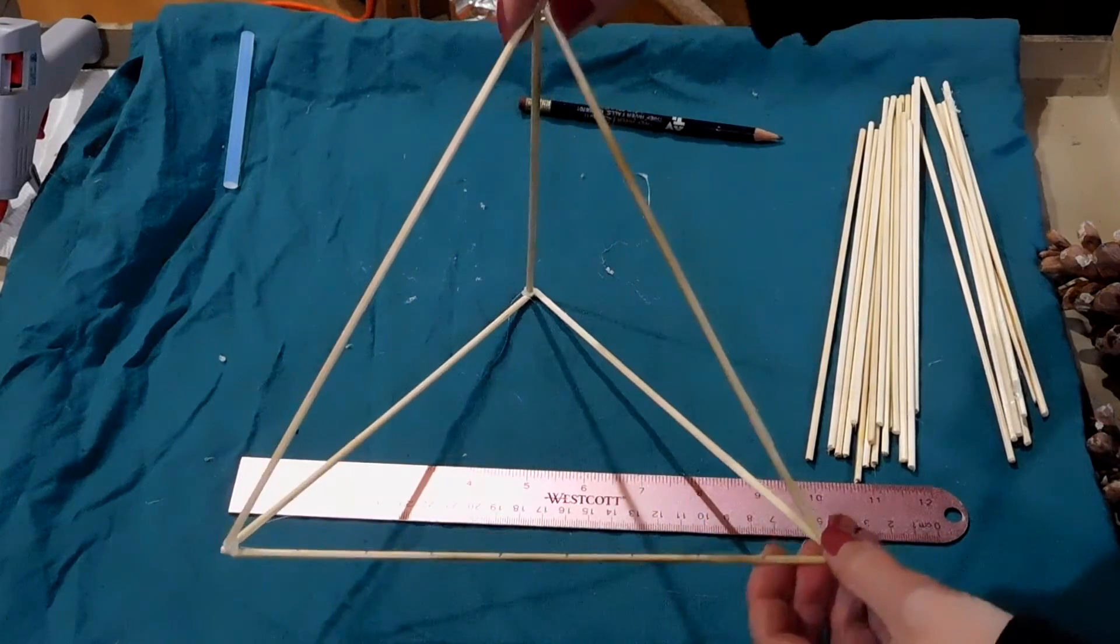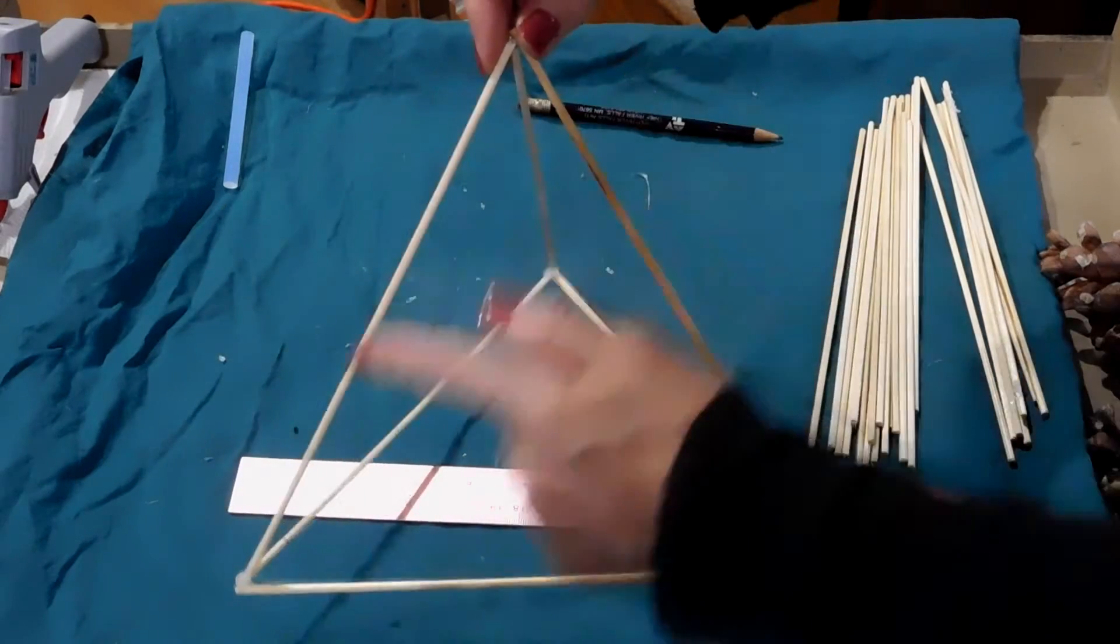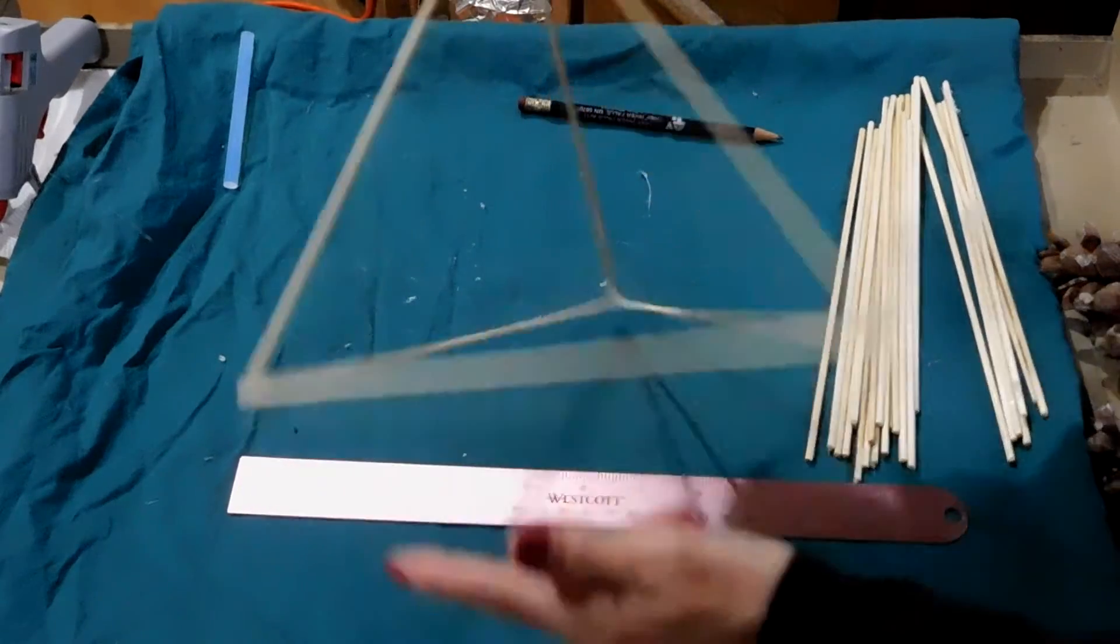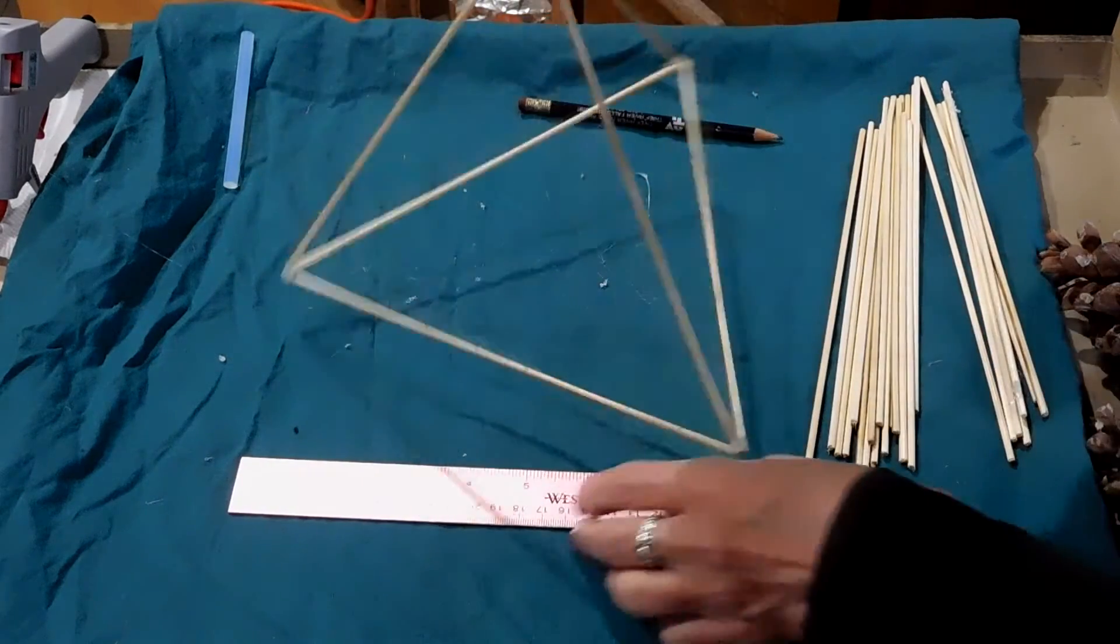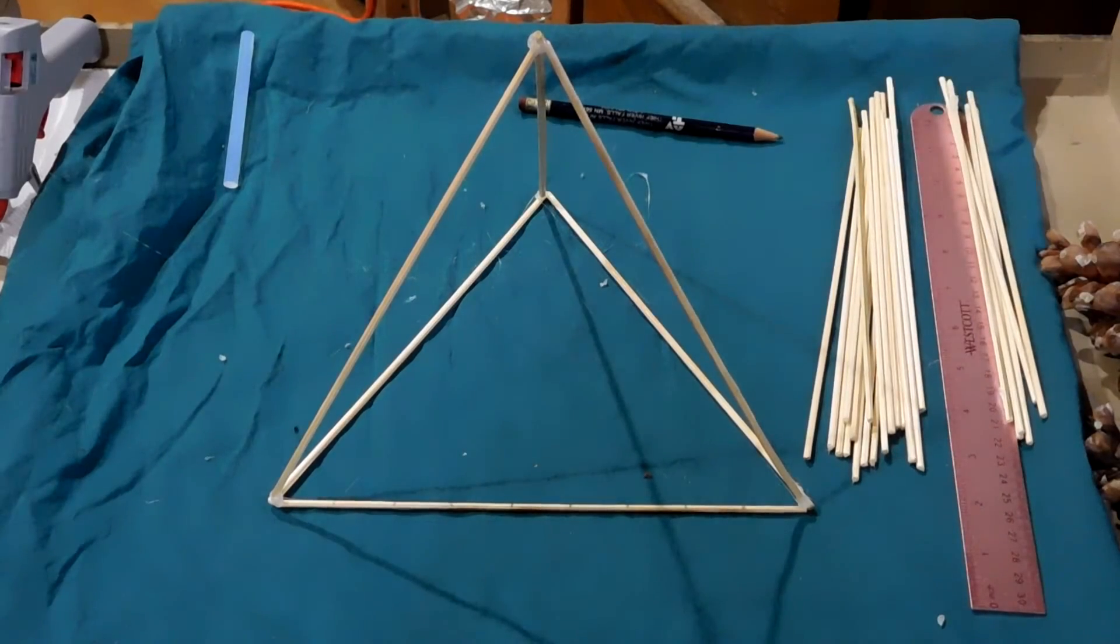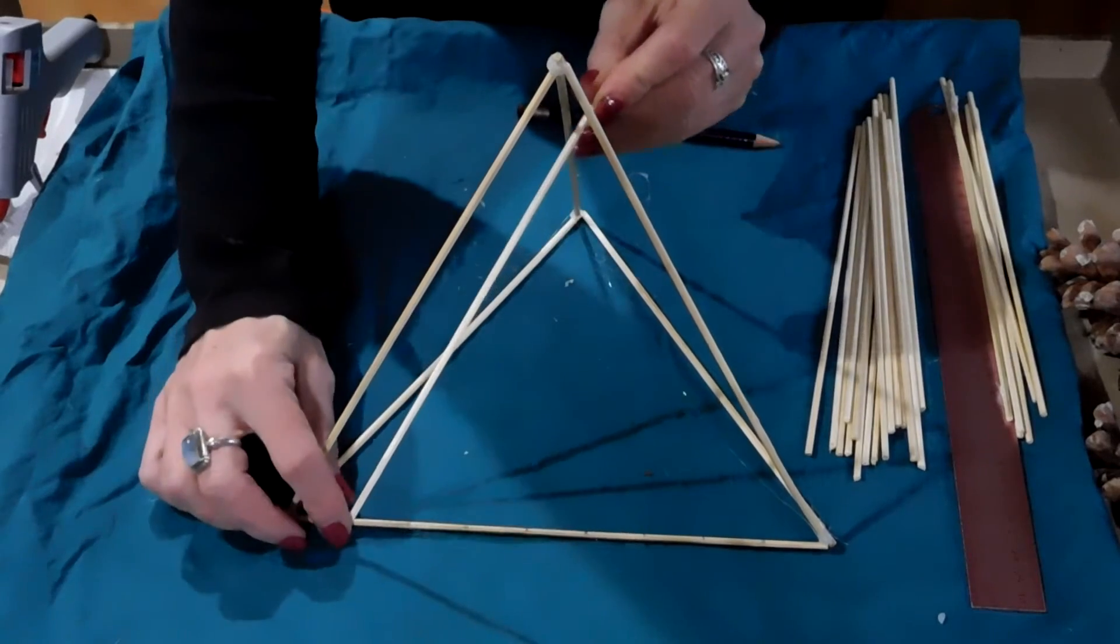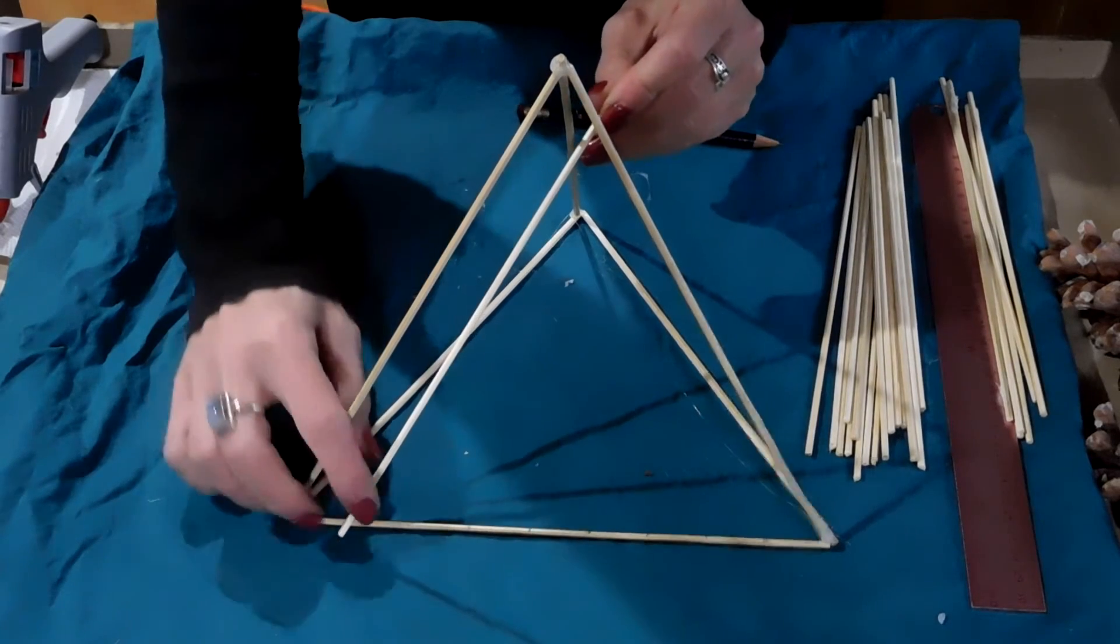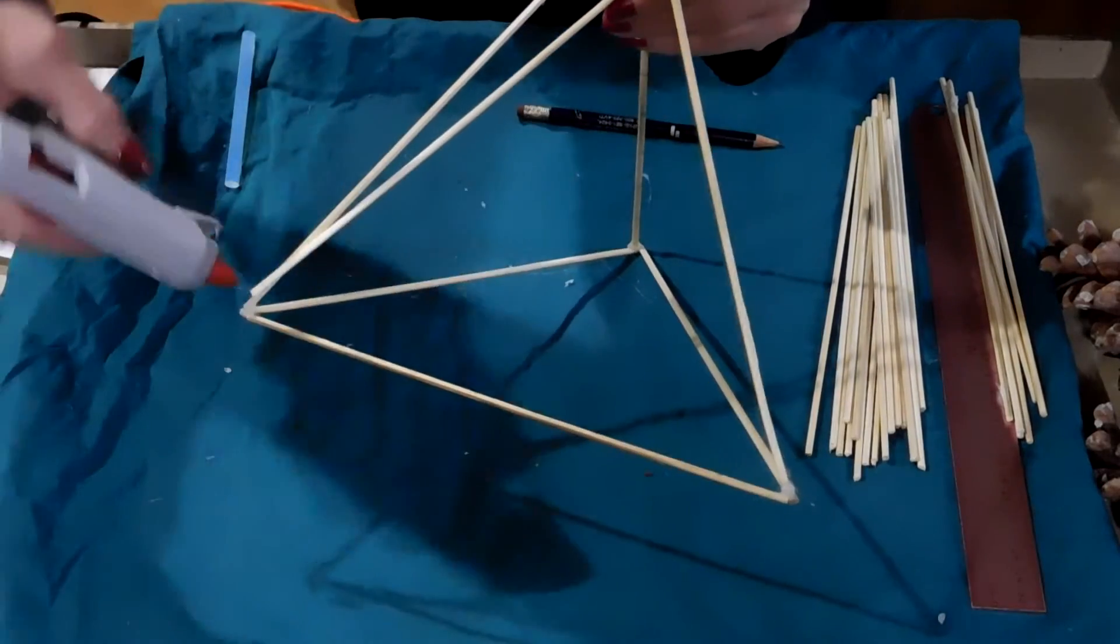Basically what we have here is a shape that's got a triangle face there, a triangle face there, a triangle face there, and then the base is also a triangle. So let's put that back the way it was. We're going to use the ruler again in a minute. What we're going to do now is use the glue and attach the bamboo skewers to connect each of these lines on this skewer with the line on that skewer. So let's get started with that.